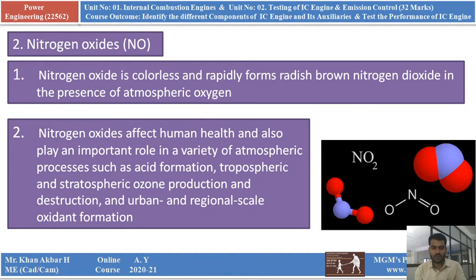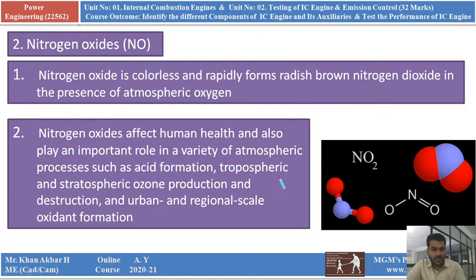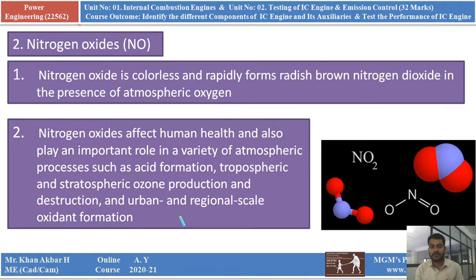Nitrogen oxide affects human health. It is very hazardous for human health and also plays an important role in a variety of atmospheric processes. These atmospheric processes include acid formation, tropospheric and stratospheric ozone production and destruction, and urban and regional scale oxidant formation. Nitrogen dioxide affects human health through these processes when it comes into contact with the environment.